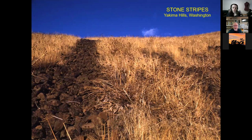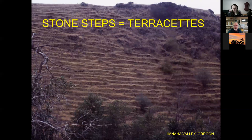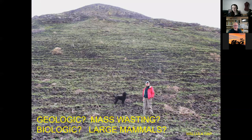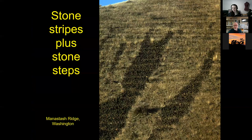Stone stripes are widespread in the Yakima Hills and are probably creeping down the hill today. Freeze-thaw helps them move, but there may also be some solifluction contributing. There is definitely some sorting — more stones here and only scattered stones there. Another phenomenon I love to talk about is terracets. Kevin Pogue and I disagree completely on the origin of terracets — are they geologic and due to mass wasting, or are they biologic and due to large mammals? I love this particular place where the terracets go right across the stone stripes, not far from you.